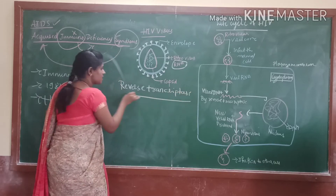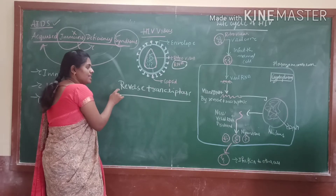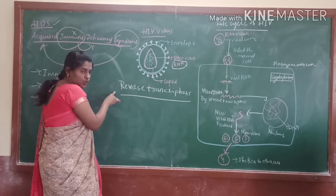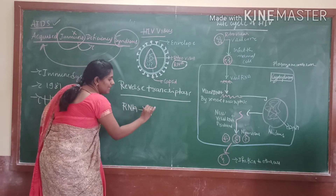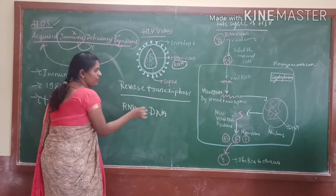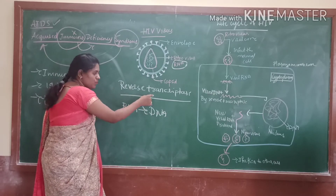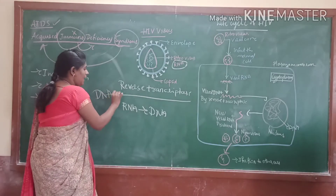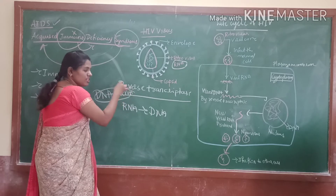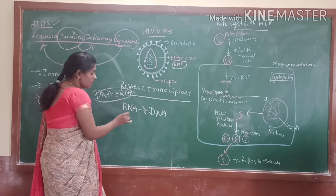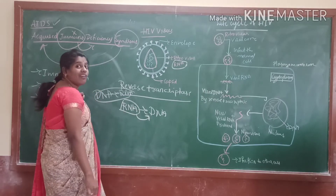What is this reverse transcriptase? This is nothing but — this virus has the capacity to convert RNA into DNA. This we call as reverse transcriptase. Transcription is what? DNA helps to synthesize RNA. But here, the reverse transcription has a reverse — the RNA has the capacity to produce viral DNA.